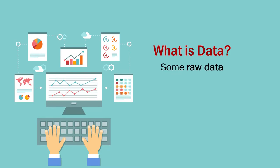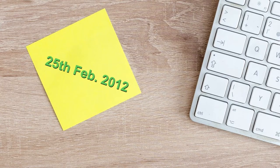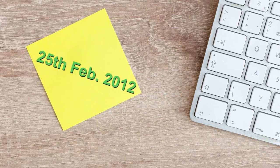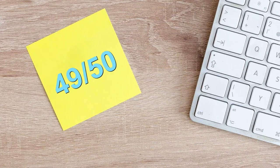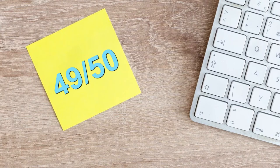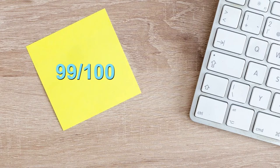Some raw data — for example, 25th February 2012 is complete data about a particular date. Something like 23,000 is a number. 49 out of 50 is a number — you all know about 49 out of 50, or 90 out of 100, or 99 out of 100, or 100 out of 100. And maybe a name like Asad, Mohan, and many more — not related to other things. So data is technically not related to other things.